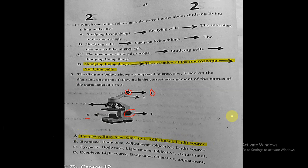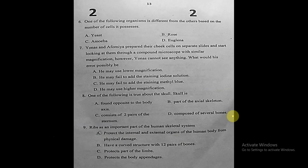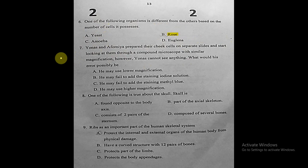Question six: one of the following organisms is different from the others based on the number of cells. Yeast, amoeba, and euglena are all unicellular. However, rose is multicellular. So the one that is different from the others is choice B: rose.